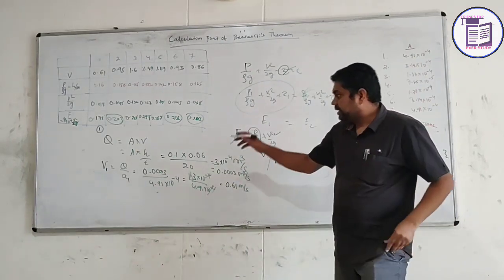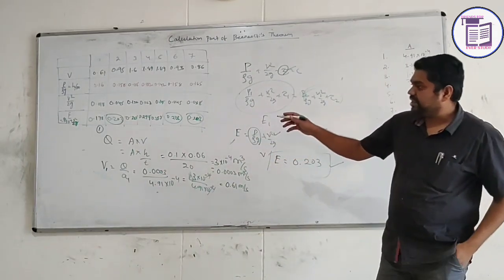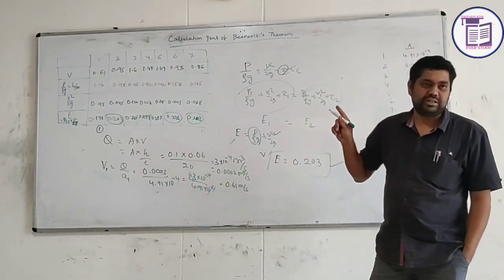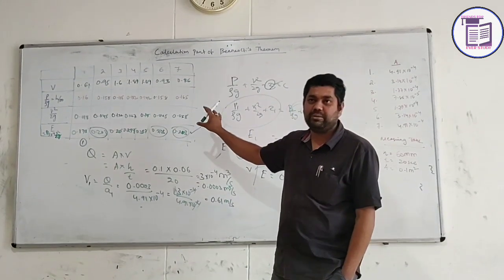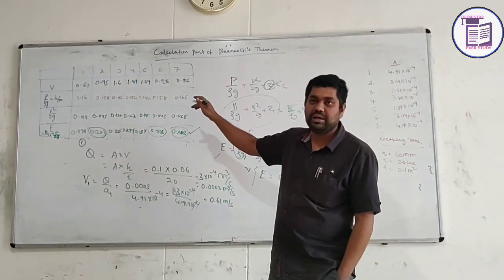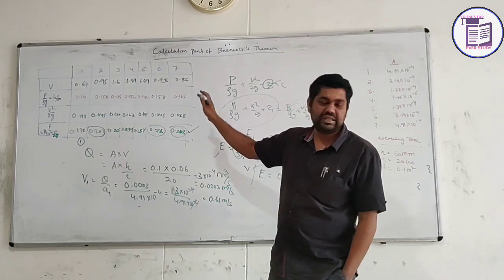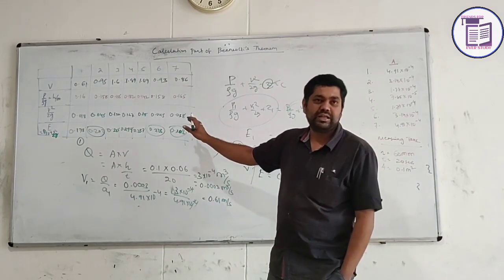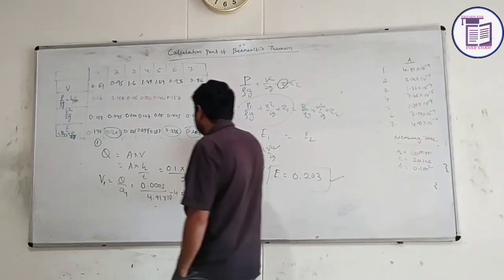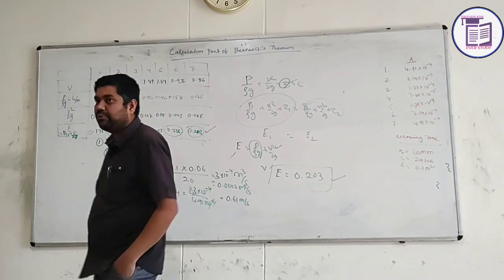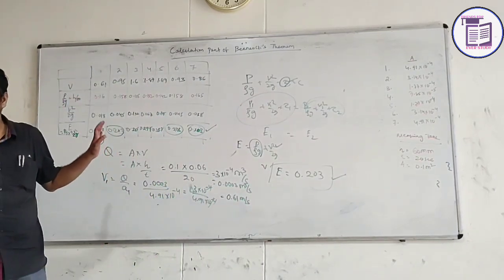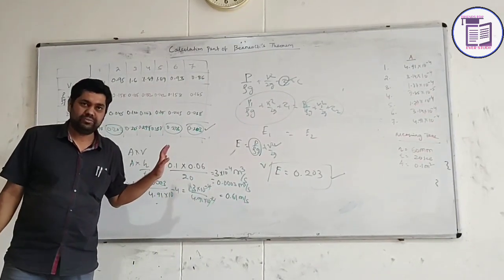Where there are different sections, you can consider one observation. Similarly, you can define different observations — take three observations in this manner, then find the mean. If you find three observations in the similar manner, you can find the energy head level. This is all about the calculation part of Bernoulli's theorem.